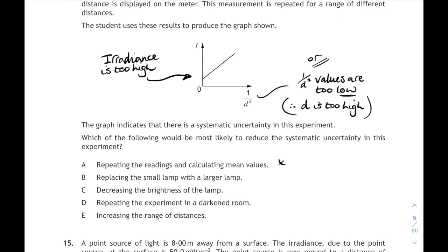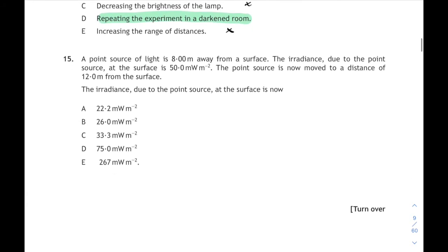What about replacing the small lamp with a larger lamp? No — we want a point source, we want a small lamp, so that wouldn't reduce the systematic uncertainty. B is wrong. C — decreasing the brightness of the bulb? No, that's not going to affect the systematic uncertainty. Repeating the experiment in a darkened room? Yes — if there is light in the room, it makes all our irradiance readings too high. We want to do it in the dark. Increasing the range of distances makes no difference. So it's D. Tough question.